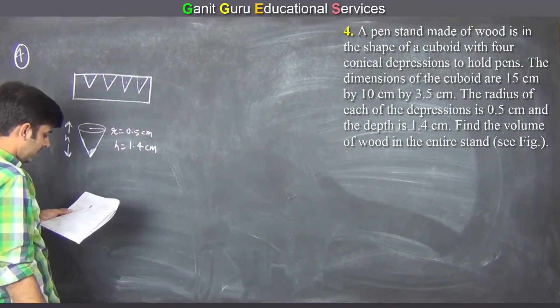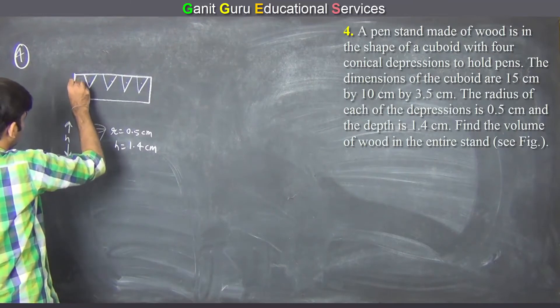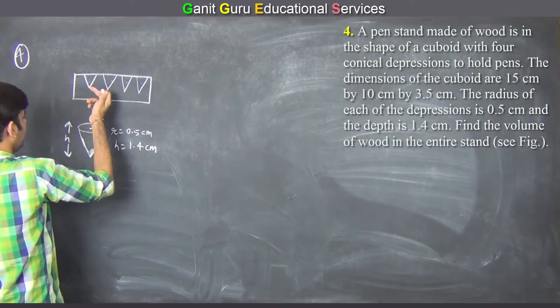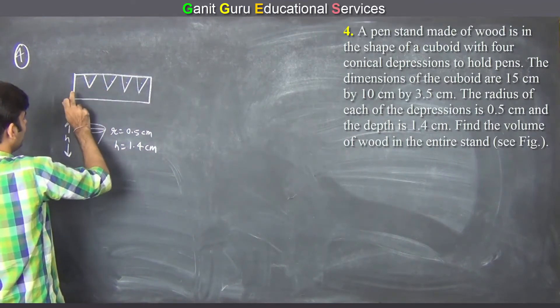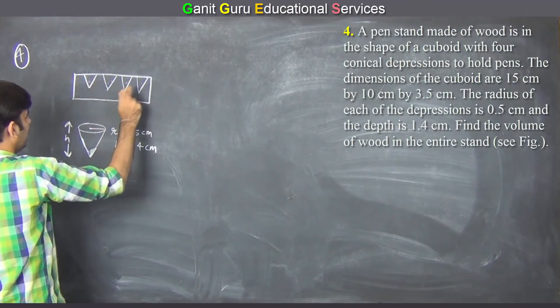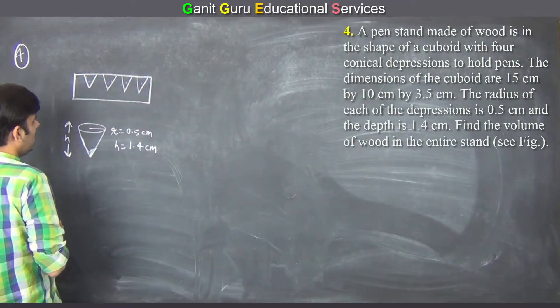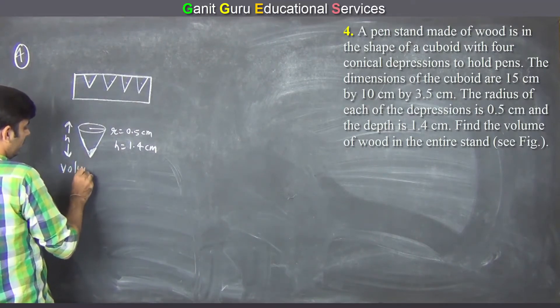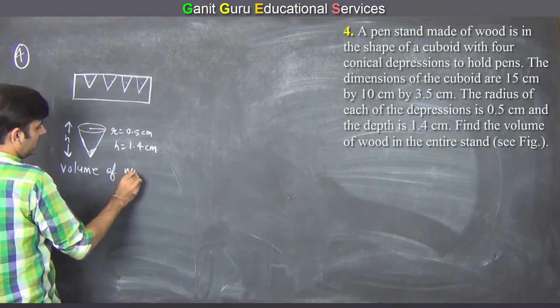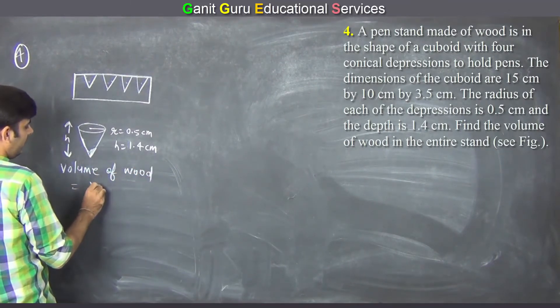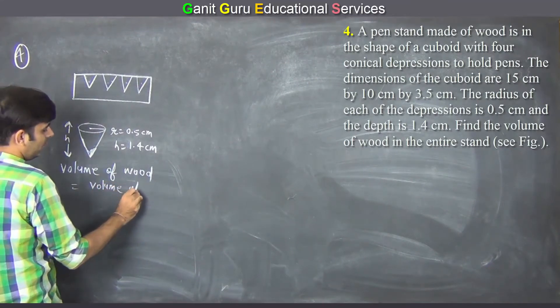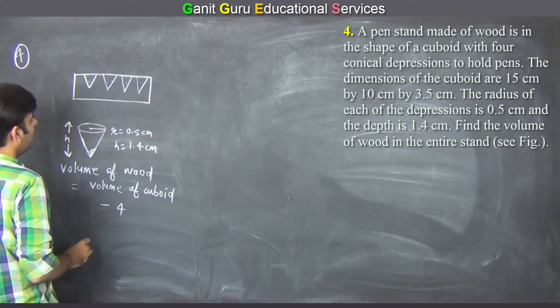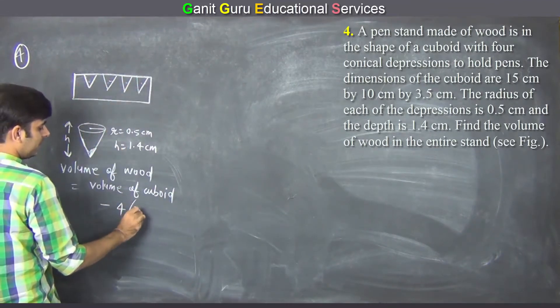Volume of the wood in the entire system. Volume of wood is volume of cuboid minus 4 times volume of cone.